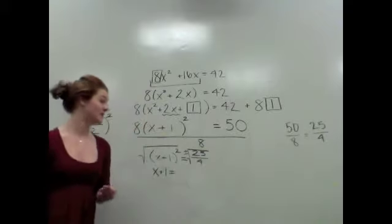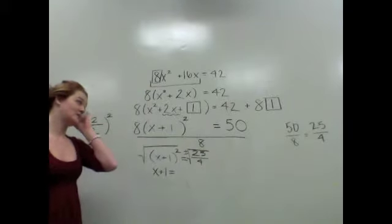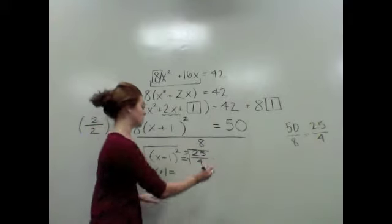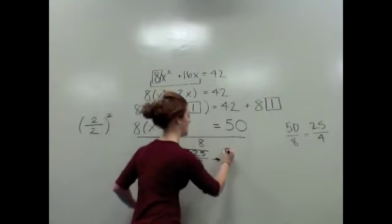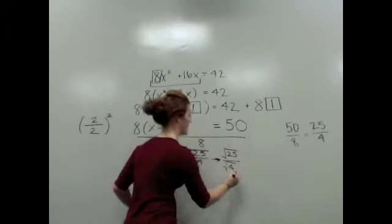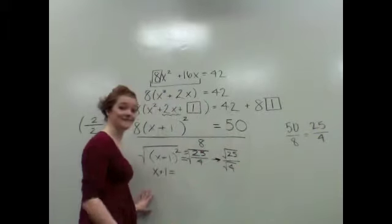Now we haven't gotten into radical properties yet. But let me just tell you, there is no addition happening. There is no subtraction happening. So essentially, you can take the square root of 25 divided by the square root of 4. Well, the square root of 25 is 5. So that's Ms. Rudolph's favorite square. And the square root of 4 is 2.